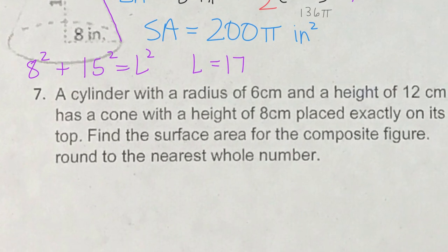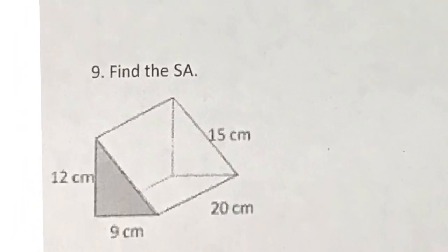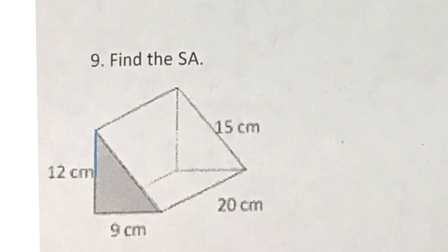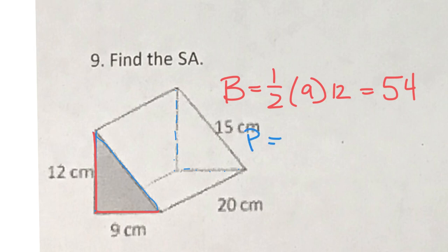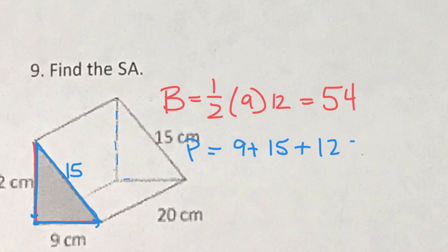Number 9 is a triangular prism — it has a triangle for a base, with another triangle on the opposite side. The base area is one-half times 9 times 12 (it's a right triangle), giving a base area of 54. The base perimeter is the sum of the three sides: 9 plus the hypotenuse of 15 plus the vertical side of 12, which totals 36.